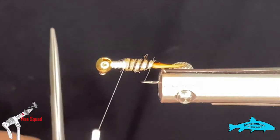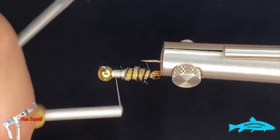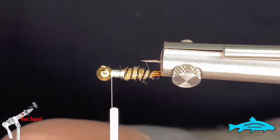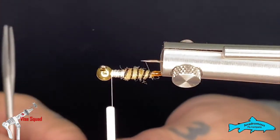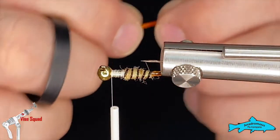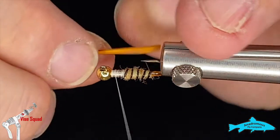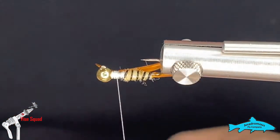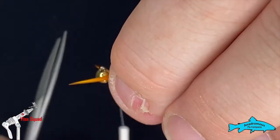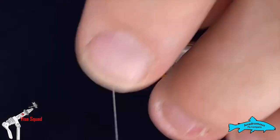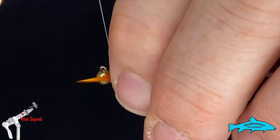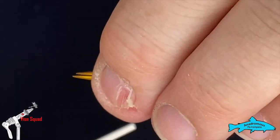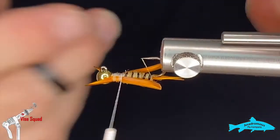All righty. Next what I'm going to do is grab two more of those biots and we'll put the front ones in. One side and then the other. You just want to make sure that they're more or less even. Pretty close. Tie those in and then snip them out.